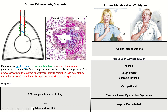Over time, patients develop the chronic changes of asthma. Looking at normal bronchial histology versus chronic asthmatic histology, you can see mucous hypersecretion, thickened basement membrane, fibrosis, and smooth muscle hypertrophy — all causing inflammation and subsequent bronchial narrowing. Everyone with asthma needs PFTs; you really want to look for obstruction.